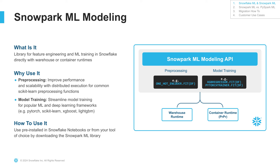For example, OneHotEncoder.fit — running OneHotEncoder is an extensive job because you're taking each value, mapping it to a column, on millions of rows with millions of columns. When you write this command, it's sent to Snowflake and runs in a parallel and distributed format automatically, with no data movement. Similarly, model XGBoost regressor.fit — when you write this command, it's sent to Snowflake and trains a model on your table sitting in Snowflake without moving your data.